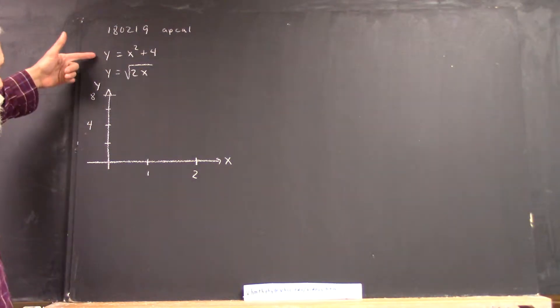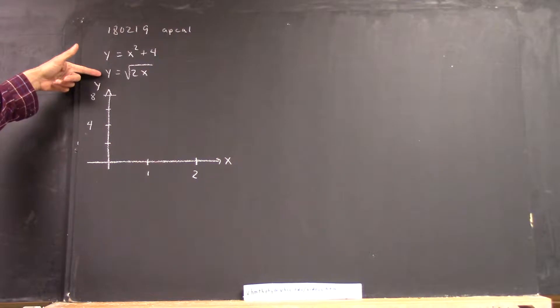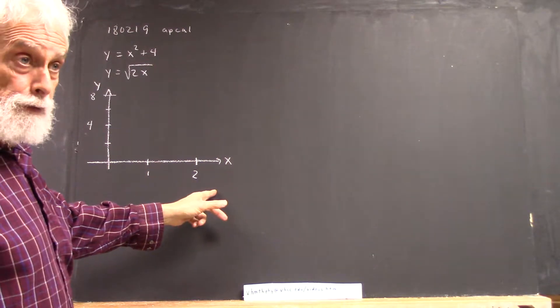So we're going to graph y equals x squared plus 4 and y equals square root of 2x, between x equals 0 and x equals 2.